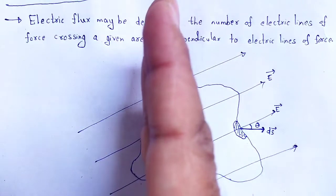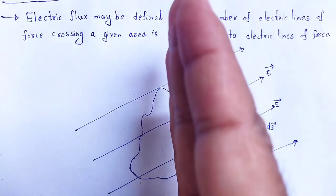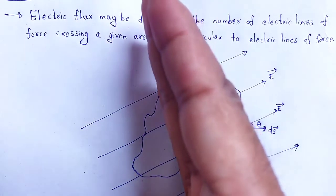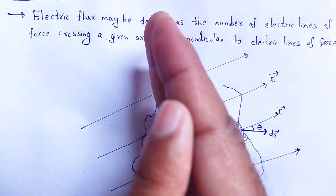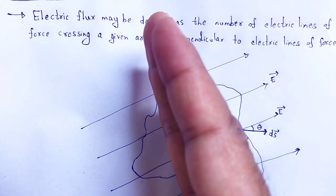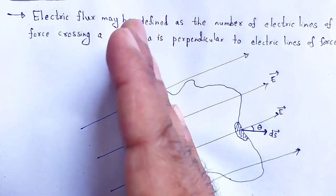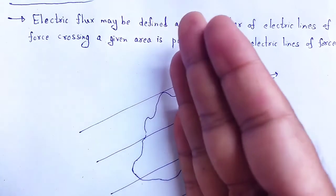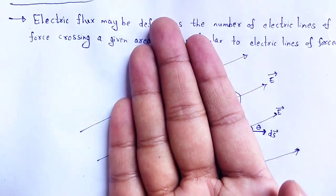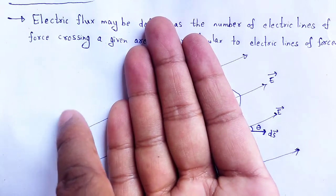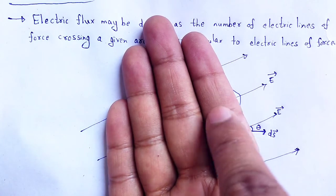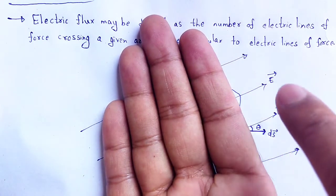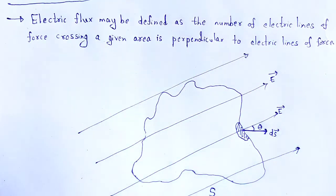There will be a confusion regarding how the area is perpendicular to the electric lines of force and the angle between dS and E. If the electric lines of force pass directly through the surface, we say the surface area is perpendicular to the electric lines of force. But when the surface area is oriented such that the electric lines of force are parallel to it, the dS vector direction is upward and the angle between E vector and dS vector is 90 degrees — that is a little bit of confusion between these cases.